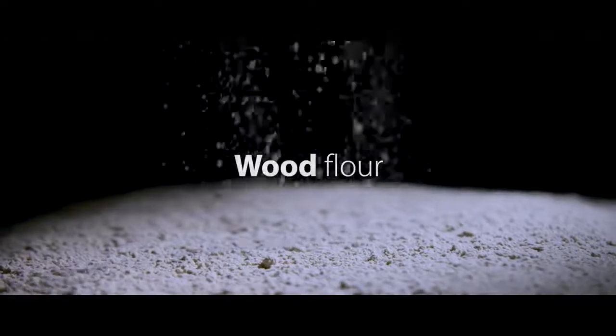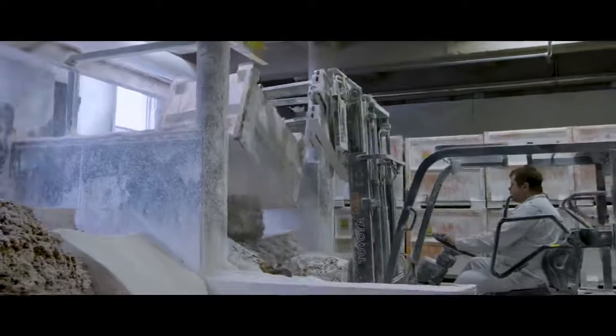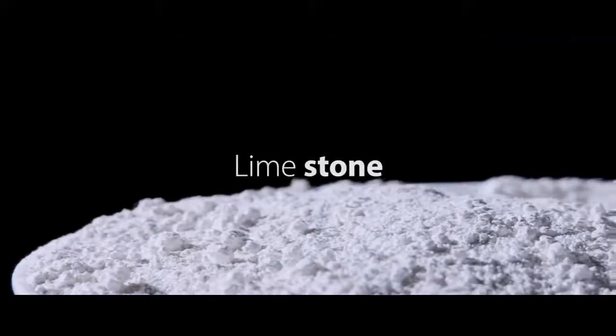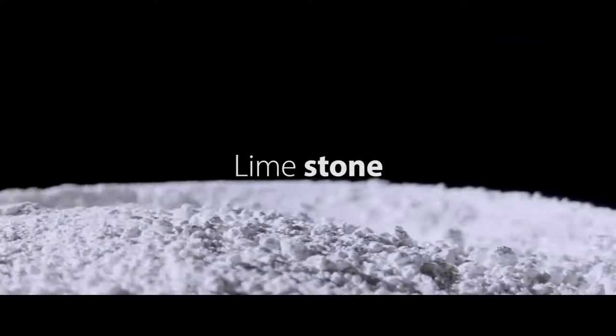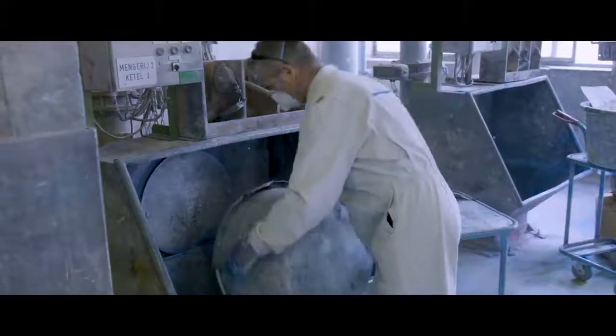Wood flour is added to the linoleum cement creating a firm dry mixture. Next, finely grinded limestone is added. Together with colour pigments, they are blended to achieve a firm homogenous mass.